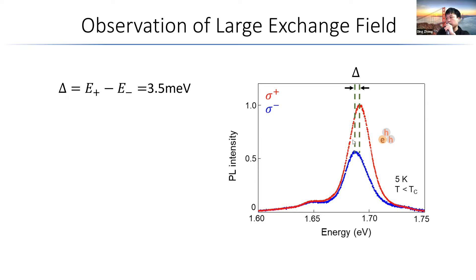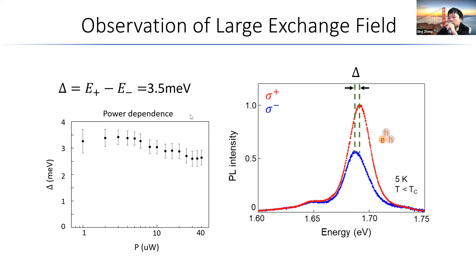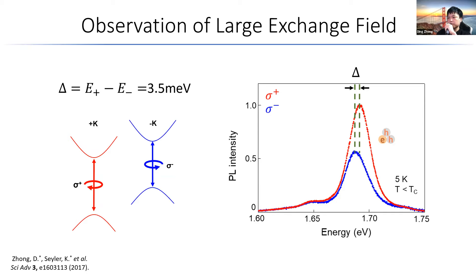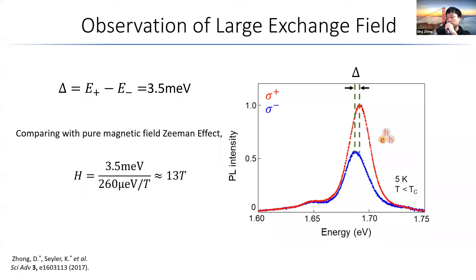The second phenomenon is the energy shift between sigma-plus and sigma-minus—in this case, we have 3.5 meV energy shift. The power dependence shows this is relatively independent of laser power, so we exclude any population-related phenomenon as the main cause. Therefore, I ascribe this to the proximity exchange field. Comparing this exchange field strength to the Zeeman effect by dividing 3.5 meV by 260 μeV/T, we get an effective magnetic field of about 13 tesla—which is pretty strong—and note that we have not applied any magnetic field at this point.